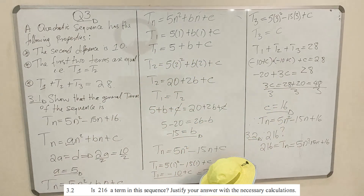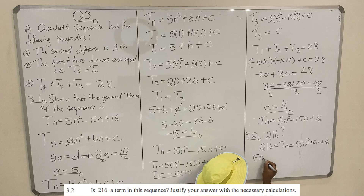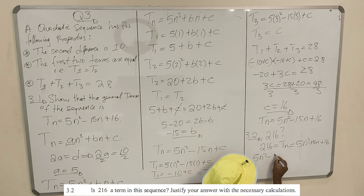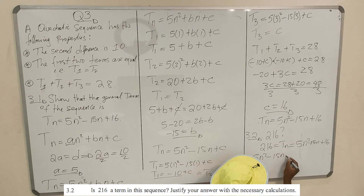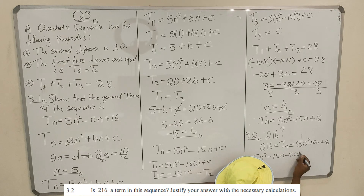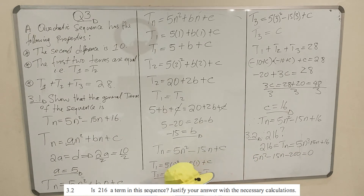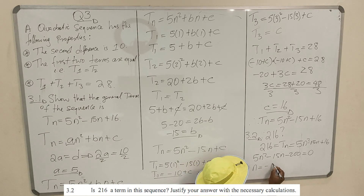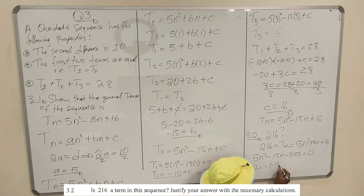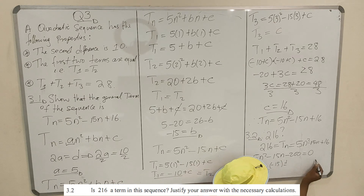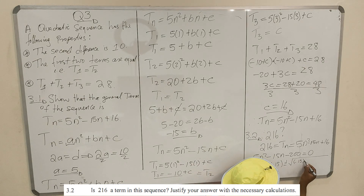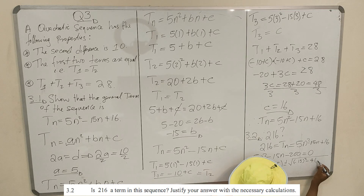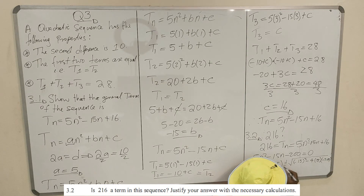So we say: 216 = 5n² minus 15n plus 16. Rearranging: 5n² minus 15n minus 200 = 0. We'll put this into the quadratic formula: n = [negative(−15) ± √((−15)² − 4(5)(−200))] divided by 2 times 5.